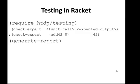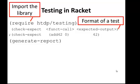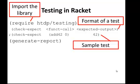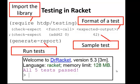So as a review of what you just saw, we can import the library HTTP testing. Here's the format of a typical test case. You would use the keyword check expect. And then you put the function call that you wanted to be evaluated and your expected output. And here's a sample test case. And then we generate report. And you're just going to include that once at the end of your file, and that will run all of your test cases or all of your check expects in that file. And what that should do is output something like all five tests pass.